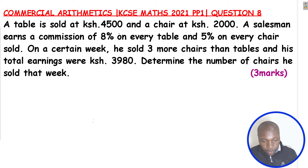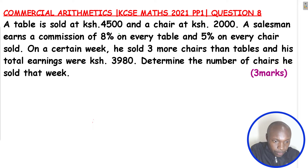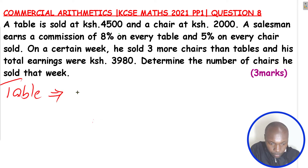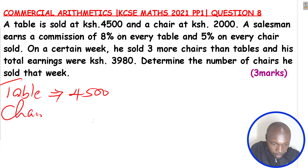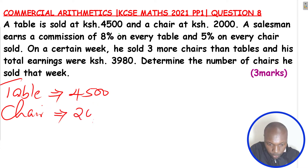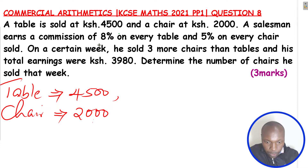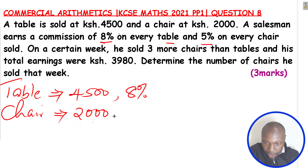So, that is the question. Let's solve it. We start with the table. The cost of one table is 4,500 shillings. The cost of each chair is 2,000 shillings. There is a commission of 8% for every table and 5% for every chair.